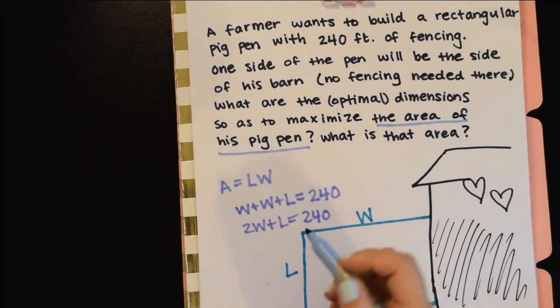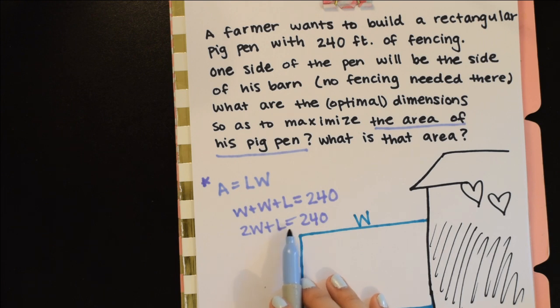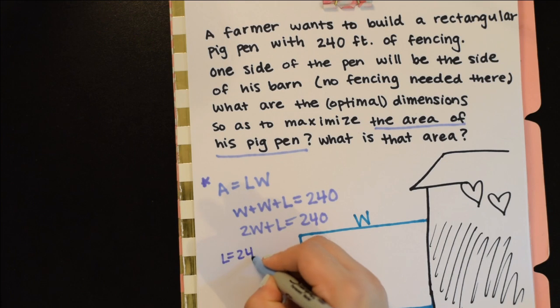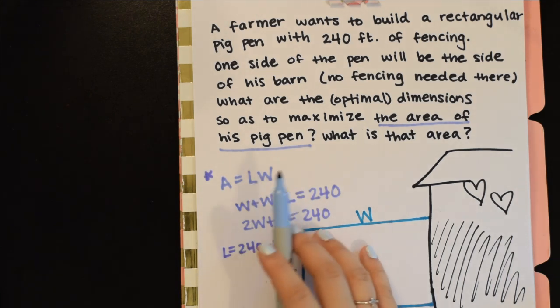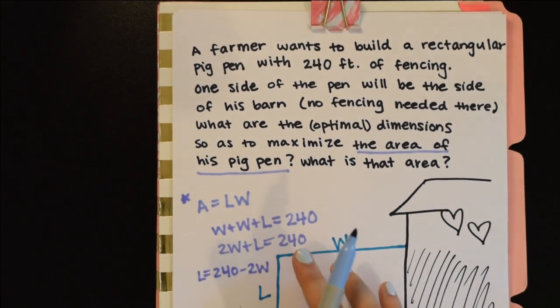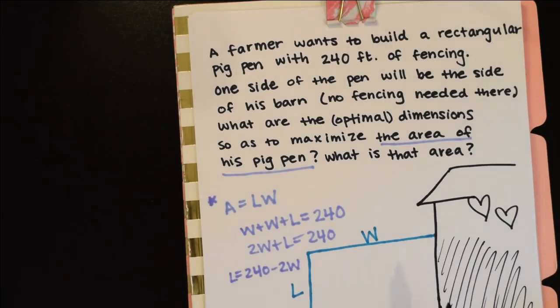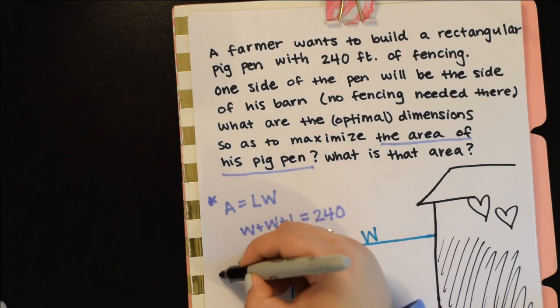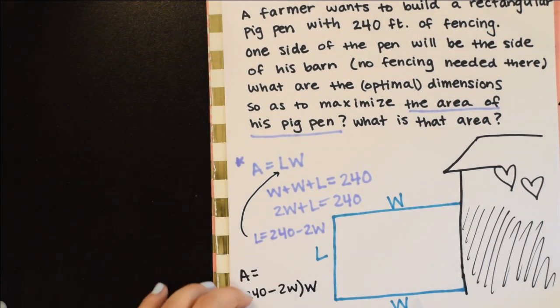We just rearrange this so that we can eliminate either L or W. I think it's easier to just say L equals 240 minus 2W. So we're going to plug back in, so now A equals (240 minus 2W) times W, which we can distribute, so 240W minus 2W² is my A.